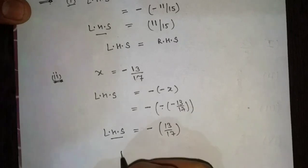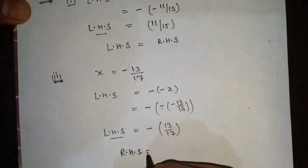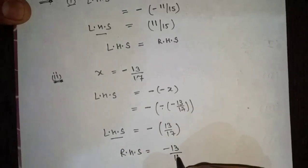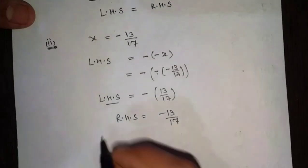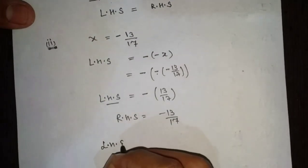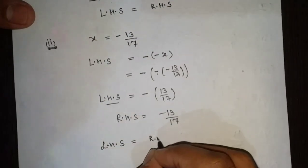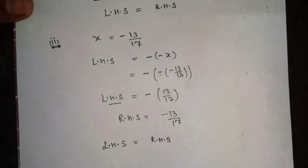The right hand side is minus 13 by 17. So left hand side is equal to right hand side, and the second part is also verified.